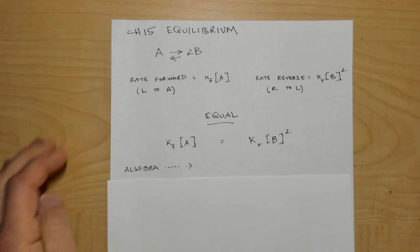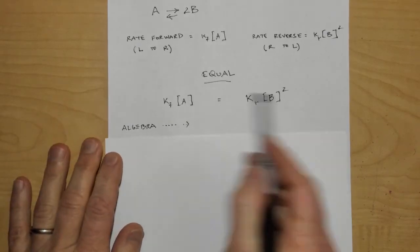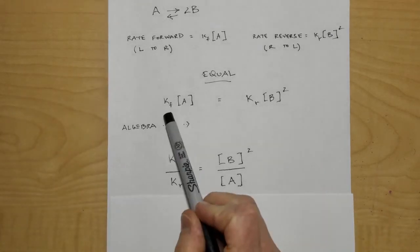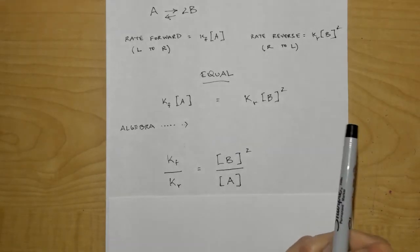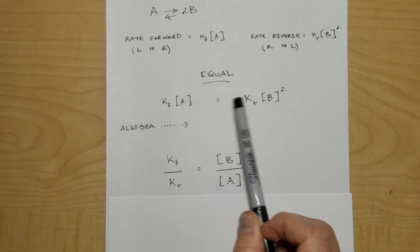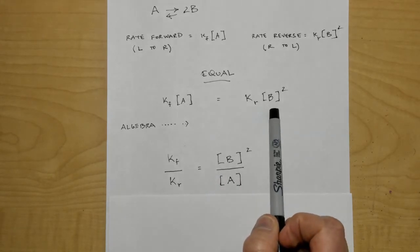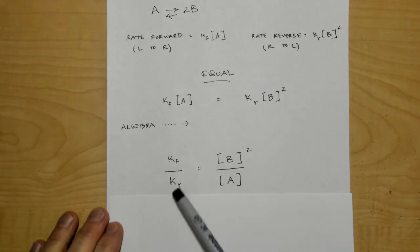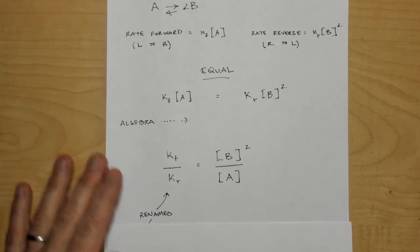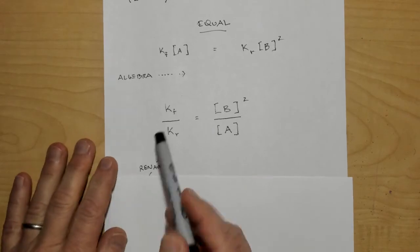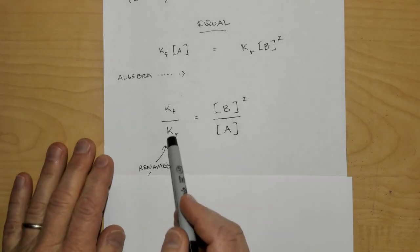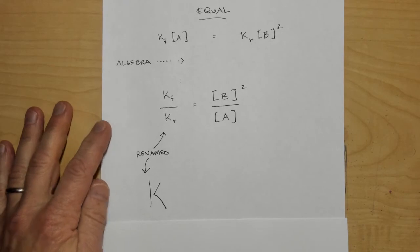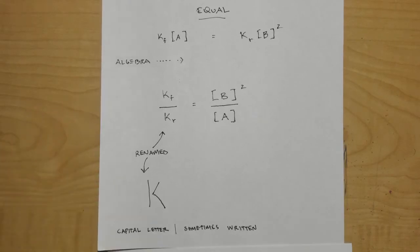Doing some algebra, I'm going to manipulate this equation: bring K_r over to one side, and bring concentration of A over to the right side. This ratio — K_f divided by K_r — is now given a brand new name: capital letter K, called the equilibrium constant.